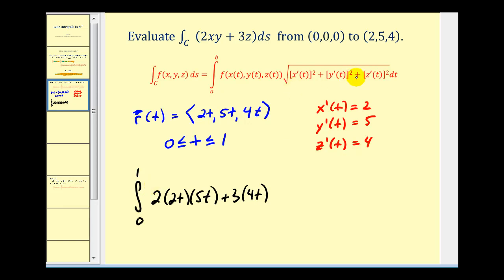We're going to multiply this by the magnitude of r prime of t. So we're going to have the square root of two squared plus five squared plus four squared dt.